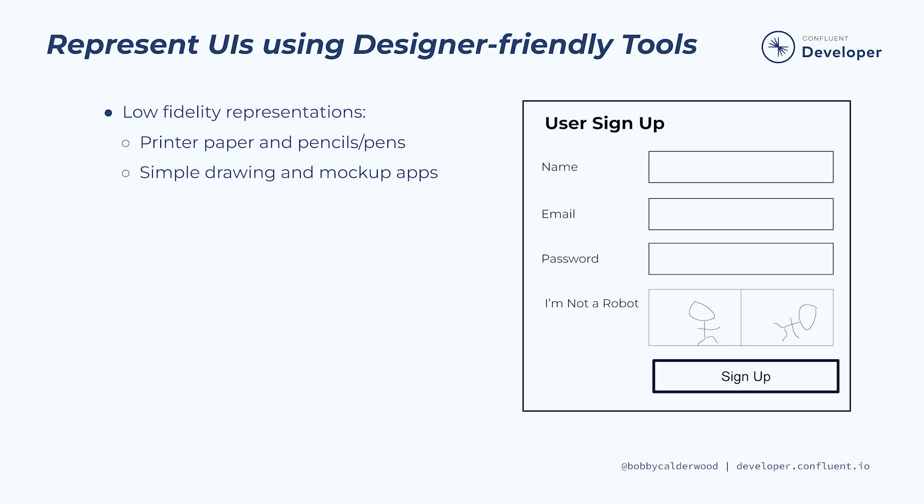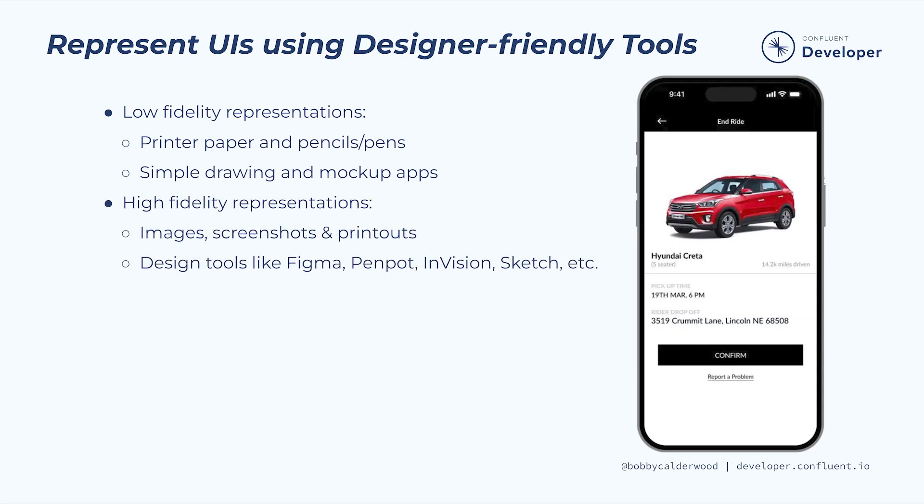Sometimes low-fidelity tools are the best for getting started quickly. In physical in-person workshops, printer paper and markers work really well. For digital workshops, you could choose a simple drawing tool. Other times, the team has already produced high-fidelity prototypes in a design tool like Figma, Penpot, Envision, Sketch, or similar. Or perhaps they have screenshots of an existing user interface that the team can use.